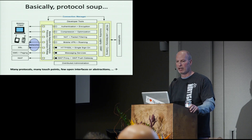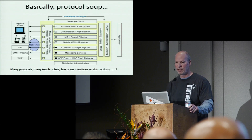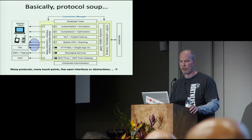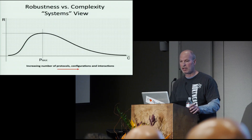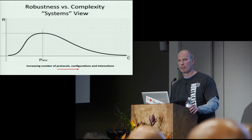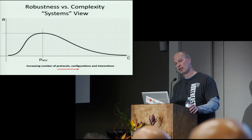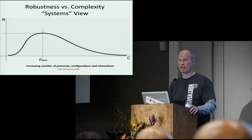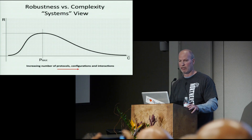What we wound up with is a mobility scenario example showing many protocols, many touch points, few open interfaces, and few or no abstractions. So you have this growing complexity. You want the network to be robust, but it's getting more complex. If you look at the curve, you can increase the robustness of the network to a certain degree by adding more complexity — but at a certain point, that complexity starts hurting you. Heading to the long tail, you notice more and more protocols, more kinds of configuration, and more interactions — a heavy-tailed curve of robustness versus complexity.